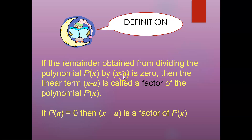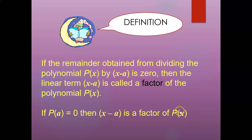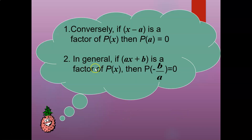So x minus a — that one written in bracket form — is your factor. If P(a) equals zero, then x minus a is a factor of P(x). Remember, for a factor, it's always in terms of x minus a or x plus a, but you have a bracket for it. That one is a factor.